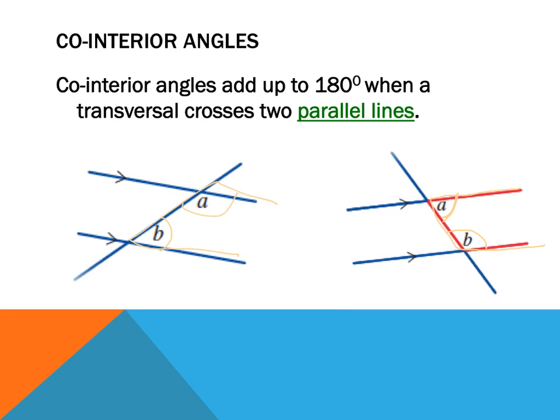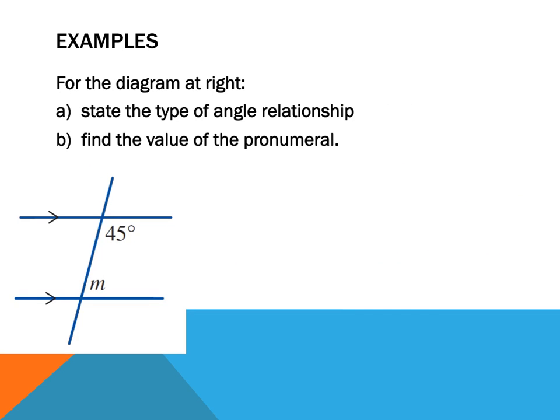So what will you be asked to do in order to prove you know this? Here's the first type of question. It says 'State the type of angle relationship for the diagram' and 'Find the value of the pronumerals.'